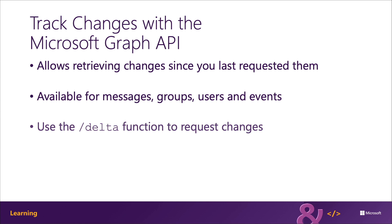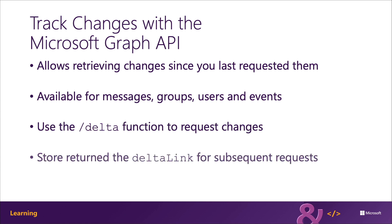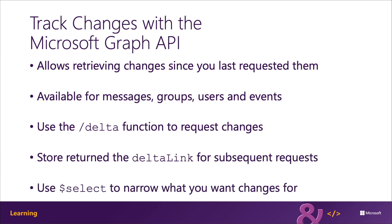Microsoft Graph will respond with a list of all the users in the collection, just like a normal HTTP GET request. However, it will include a new property, OData.DeltaLink, in the response. The value of this property is a link that your application should save for future use. Your app can then use this Delta Link URL to submit the same request, except the response will only include items that have changed since the first call. The second response will include a new Delta Link, replacing the previous one, allowing your application to retrieve all changes since that second request.